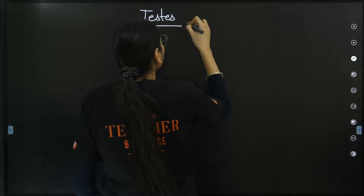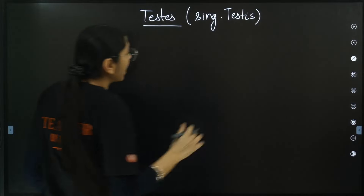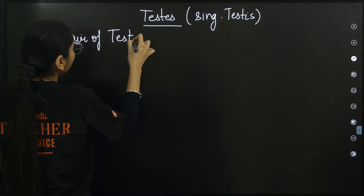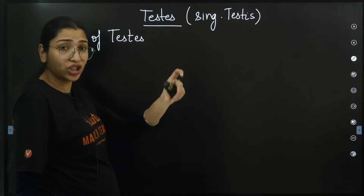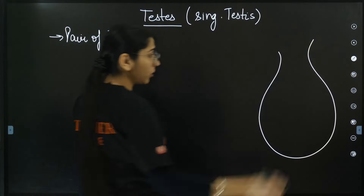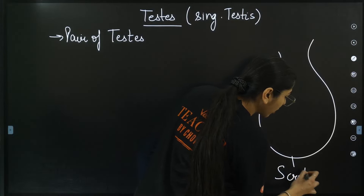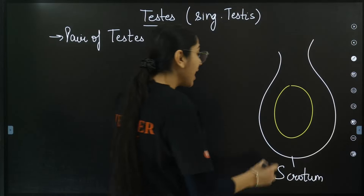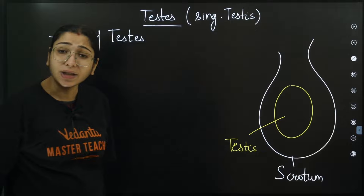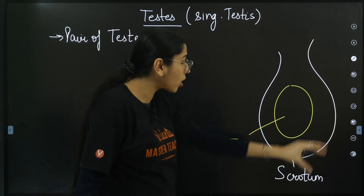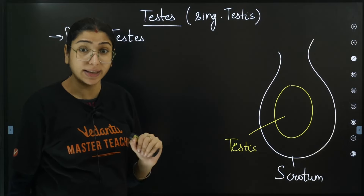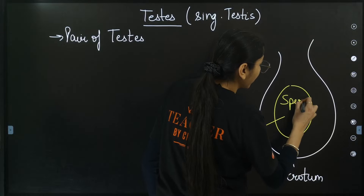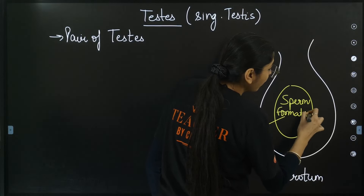Let's discuss the testis. The plural is testes and singular is testis. A pair of testis is present in human males. The location of the testis is quite peculiar - it is located inside a pouch-like structure called the scrotum. The scrotum is a sack-like structure outside the abdomen in which the testis is present. Sperm formation takes place inside the testis.